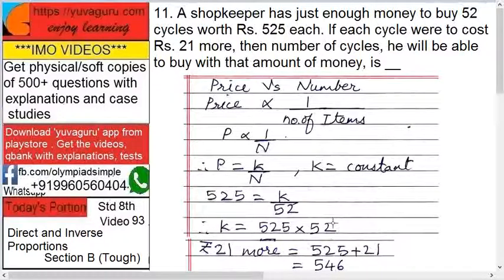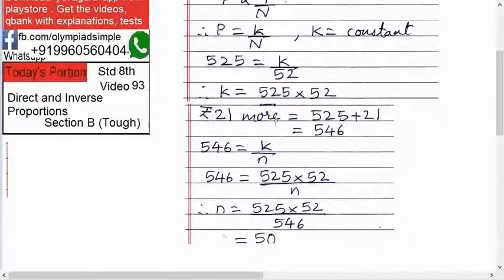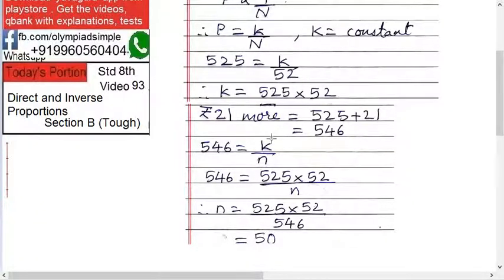Now you have K. If the cost is 21 rupees more, then the new cost is 525 plus 21, which is 546. Using the same equation, 546 equals K upon n, where n is what we have to find.